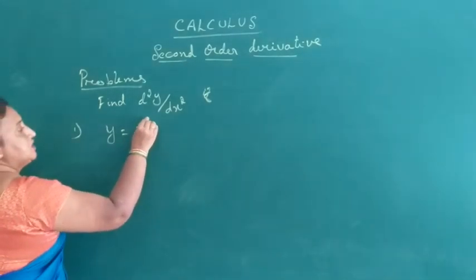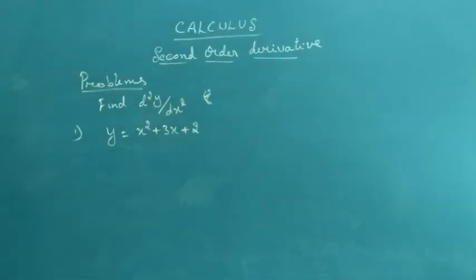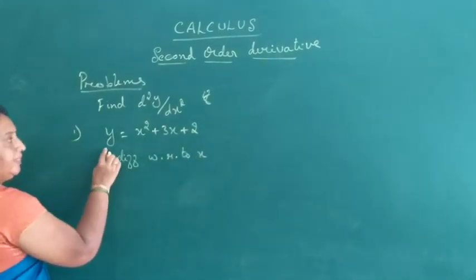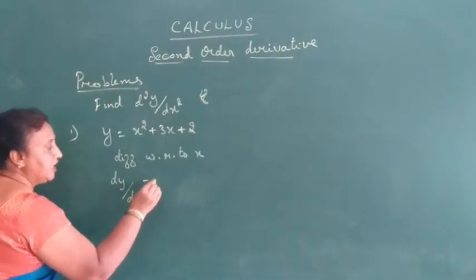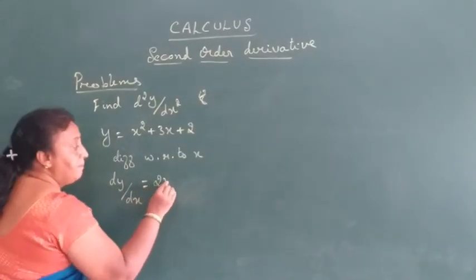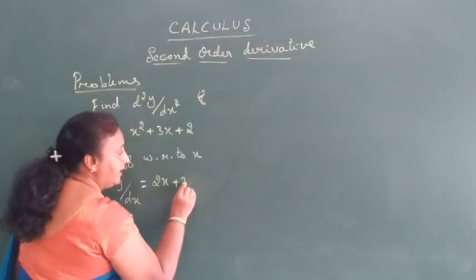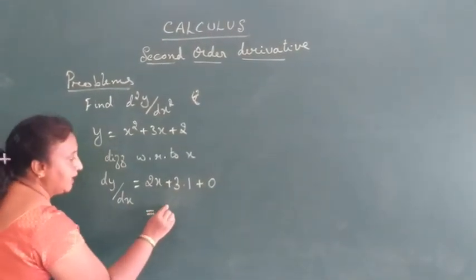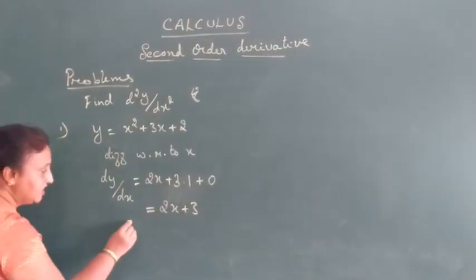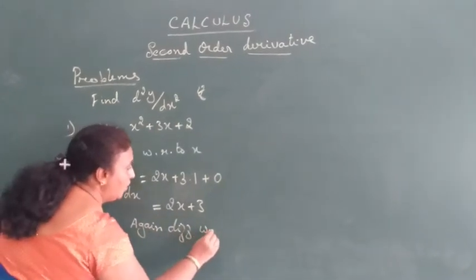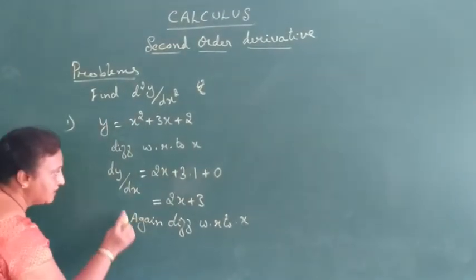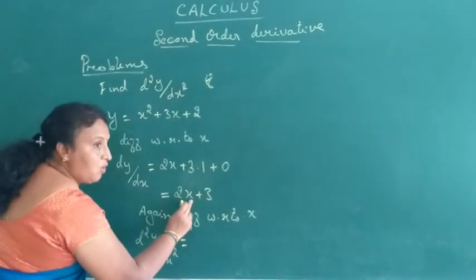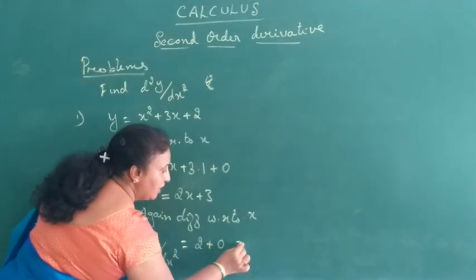Problem 1: y equals x² + 3x + 2. Differentiate with respect to x: dy/dx equals the derivative of x² which is 2x, plus the derivative of 3x which is 3, plus the derivative of 2 which is 0. So dy/dx equals 2x + 3. Again differentiate with respect to x: d²y/dx² equals 2.